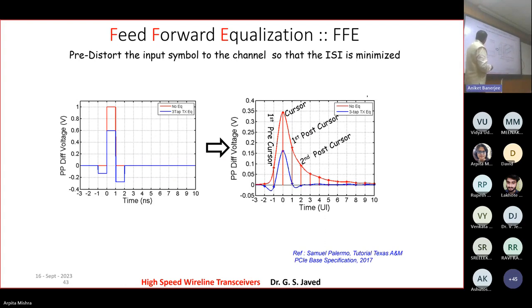You will do this with no equalization. The red line is the regular pulse that you have sent. Here in the TX side, you need feed forward. So you try and introduce some tap. What are those taps?